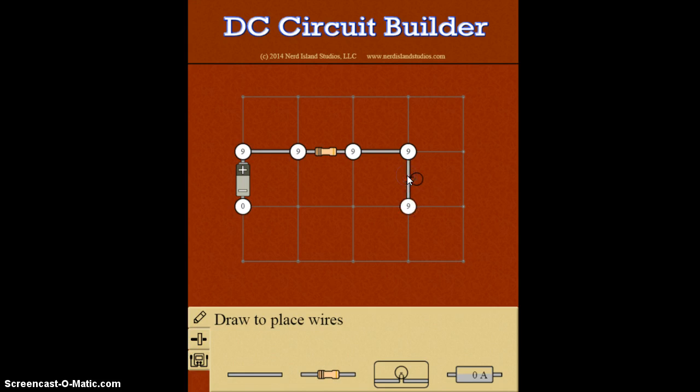So now I want to add a little light here. Another light here. Then I'm going to put my ammeter here. Ammeter just measures current. And then back to our wire.